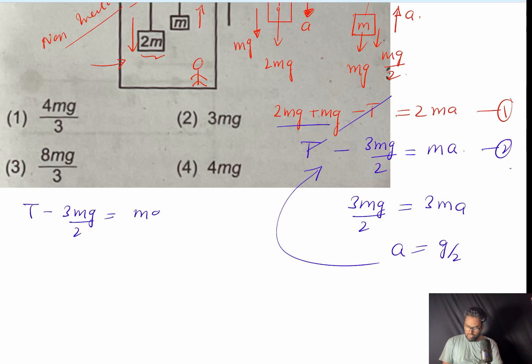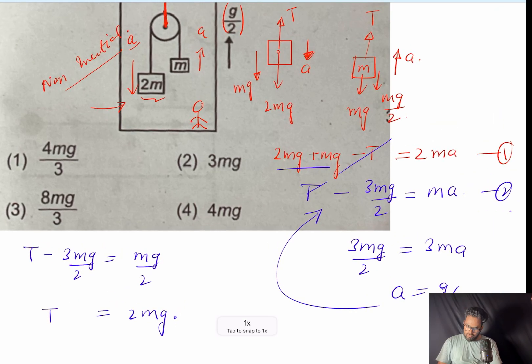Substituting this acceleration into equation number two: T minus 3mg/2 equals 3mg/2·(1) — wait, m·(g/2) — so T equals 2mg.